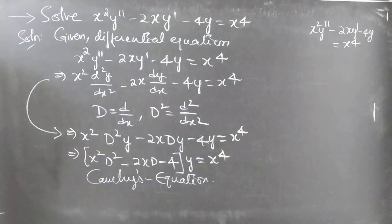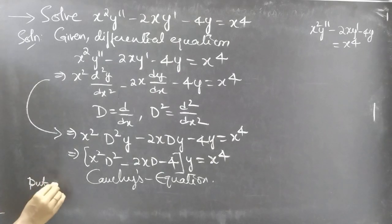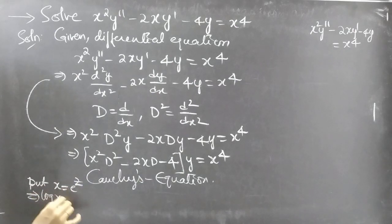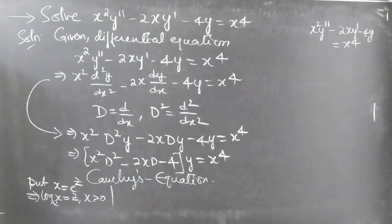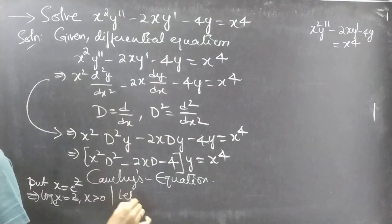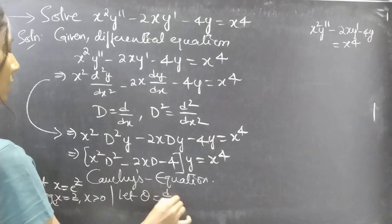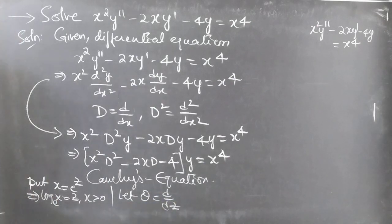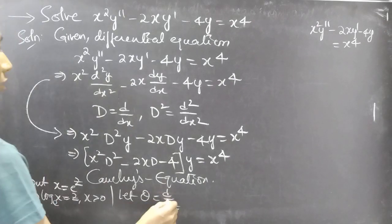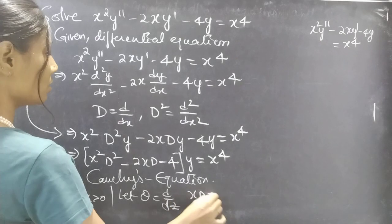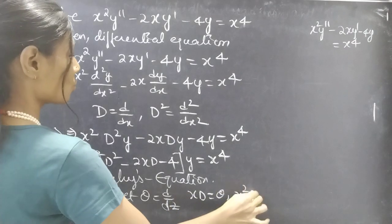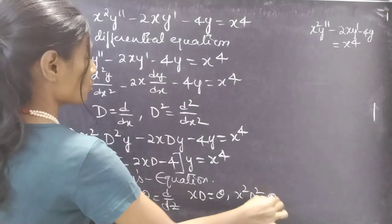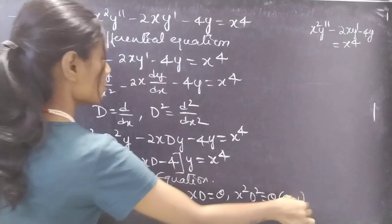Now let's make the substitution. Let x equals e^z, then log_e(x) equals z for x greater than 0. Let θ equals d/dz, where θ is a differential operator with independent variable z. Then xD equals θ, and x²D² equals θ(θ minus 1).